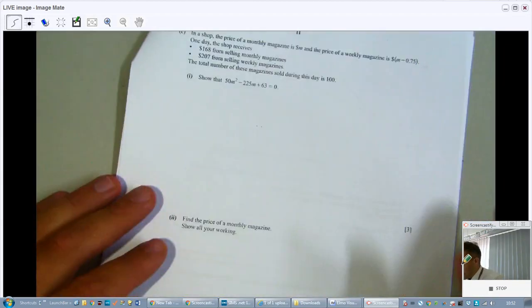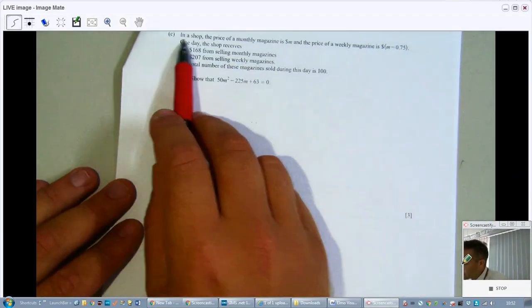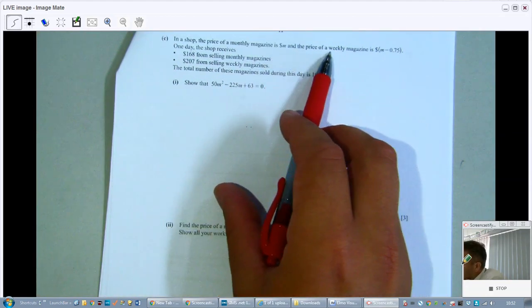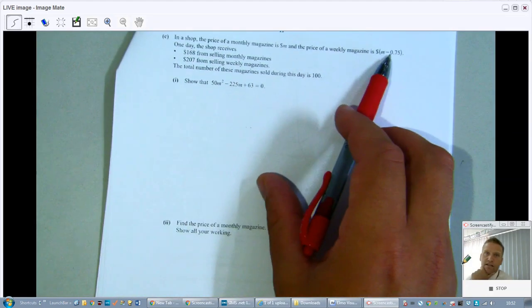More algebra? Yes, more algebra. In a shop, the price of a monthly magazine is M dollars, and the price of a weekly magazine is M minus 75 cents.